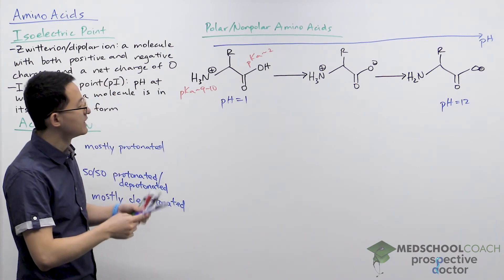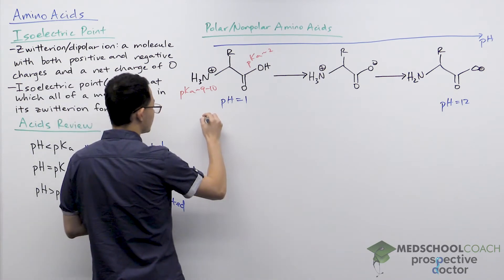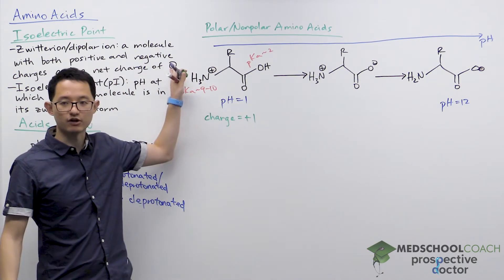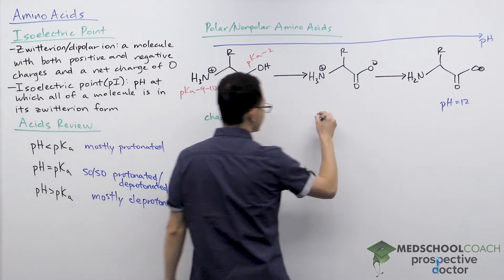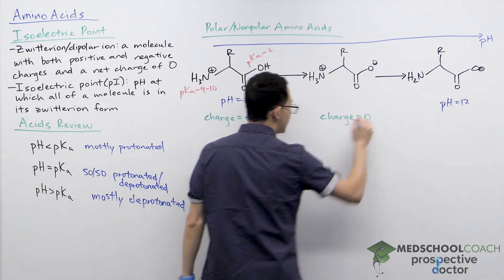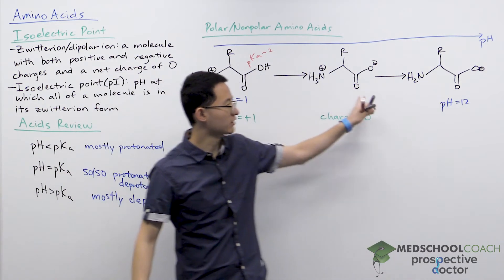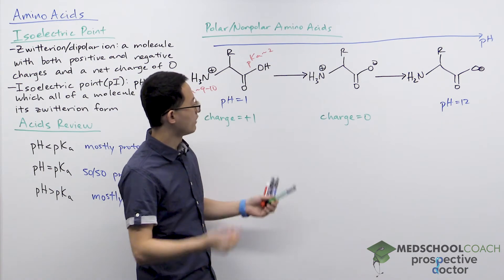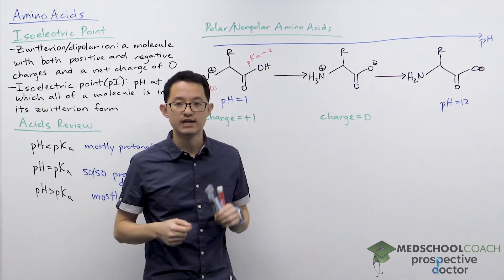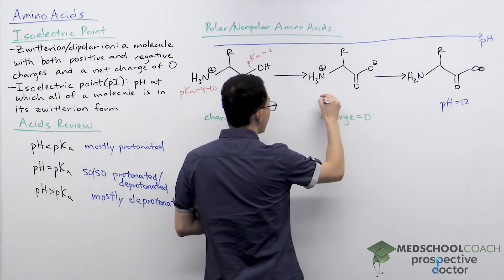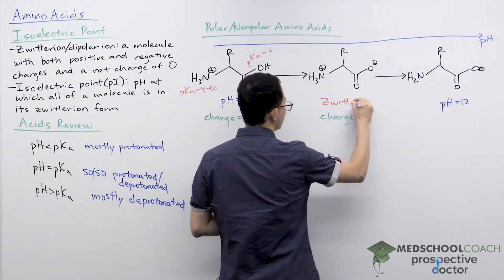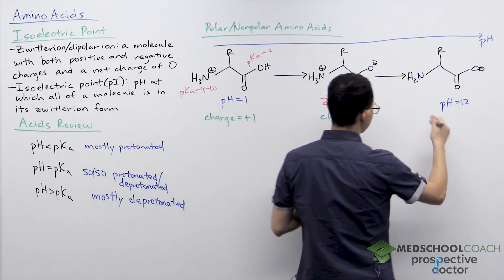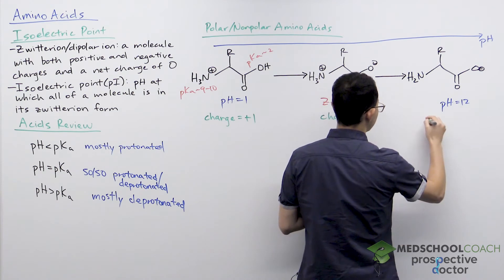Next, let's look at the charge of each state. The molecule on the left has a plus one charge — there's a positive charge and nothing else. The molecule in the middle has a charge of zero: the amino group has a plus one charge and the carboxyl group has a minus one charge that cancels out. So here we have a molecule with positive and negative charges but a net charge of zero — that means this is our zwitterion. The last molecule only has a minus one charge.